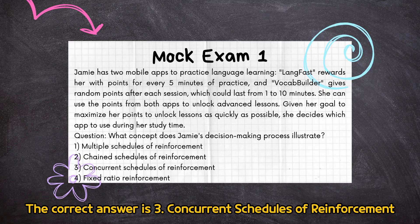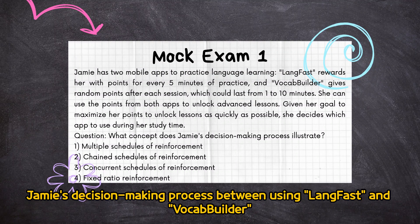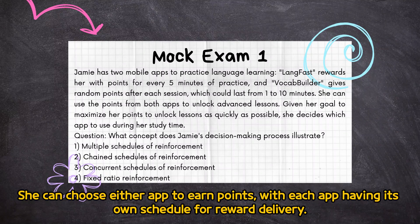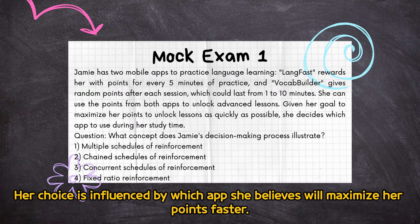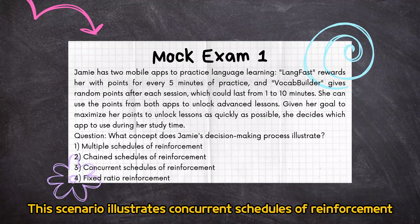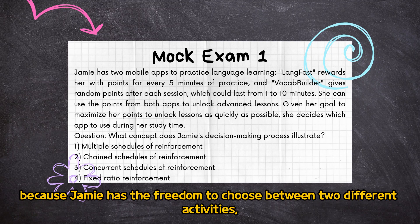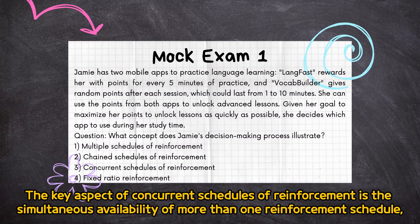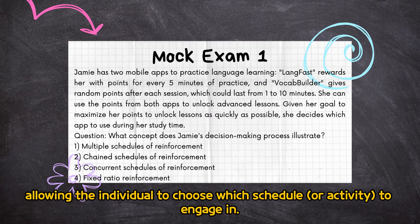The correct answer is 3: concurrent schedules of reinforcement. Jamie's decision-making process between using LangFest and VocabBuilder is based on the availability of two different reinforcement schedules at the same time. She can choose either app to earn points, with each app having its own schedule for reward delivery. Her choice is influenced by which app she believes will maximize her points faster. This scenario illustrates concurrent schedules of reinforcement because Jamie has the freedom to choose between two different activities, each with its own reinforcement schedule, to achieve her goal.